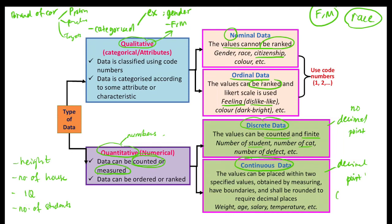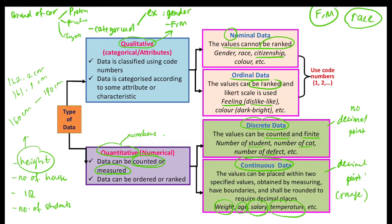Continuous data is data that can be measured and has decimal places — it has a range. For example, height can be between 160 cm and 190 cm, so it can be 161.1 cm, 162.2 cm, and so on. Weight, age, salary, and temperature are all examples of continuous data. You have to identify whether your data is qualitative or quantitative, and if quantitative, whether it is discrete or continuous.